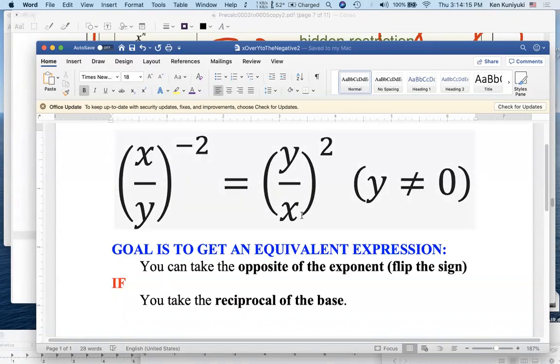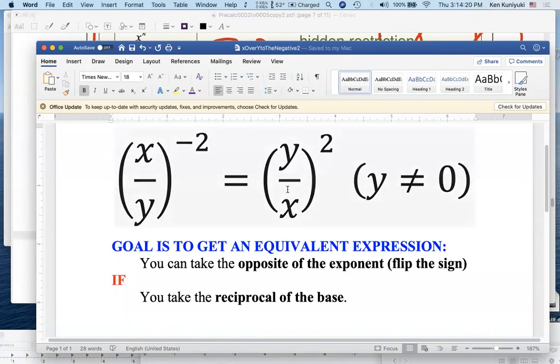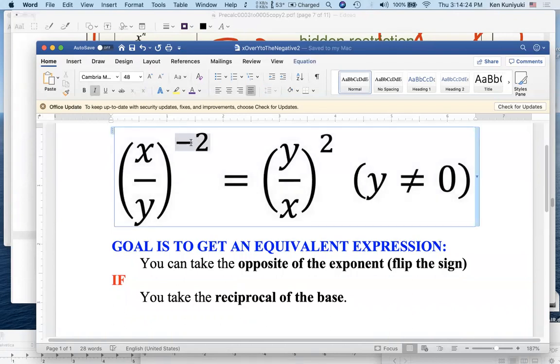In particular, all cases where x and y are not equal to zero. Now, to get from the left side to the right side, what can you do? We don't like these negative exponents. We can take the opposite of that exponent, that is, we flip the sign on the exponent, here from negative to positive.